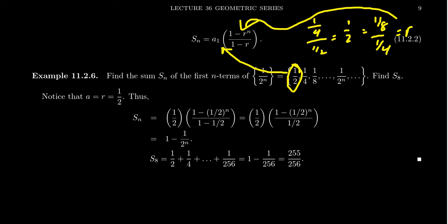In which case, then we get something like the following. We're going to get 1 half times 1 minus 1 half to the n over 1 minus 1 half. Now, 1 minus 1 half is itself equal to 1 half. And these 1 halves will cancel, multiplying by 1 half and dividing by 1 half. And so your final result, the general formula for S_n right here is going to be 1 minus 1 over 2 to the n.